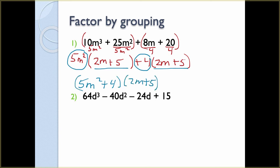The answer is (5m² + 4)(2m + 5). Remember when factoring, factors are things that multiply together to get to something larger — these are binomials being multiplied together, so there should not be any pluses or minuses between the actual parentheses.